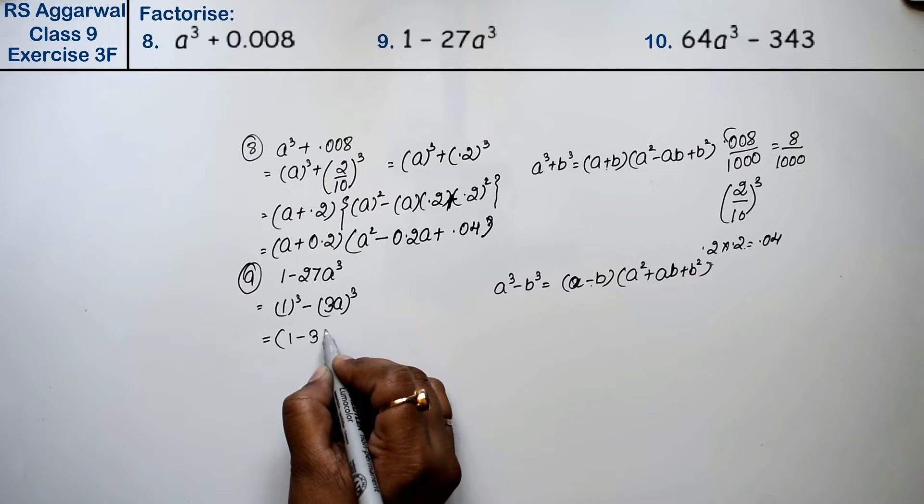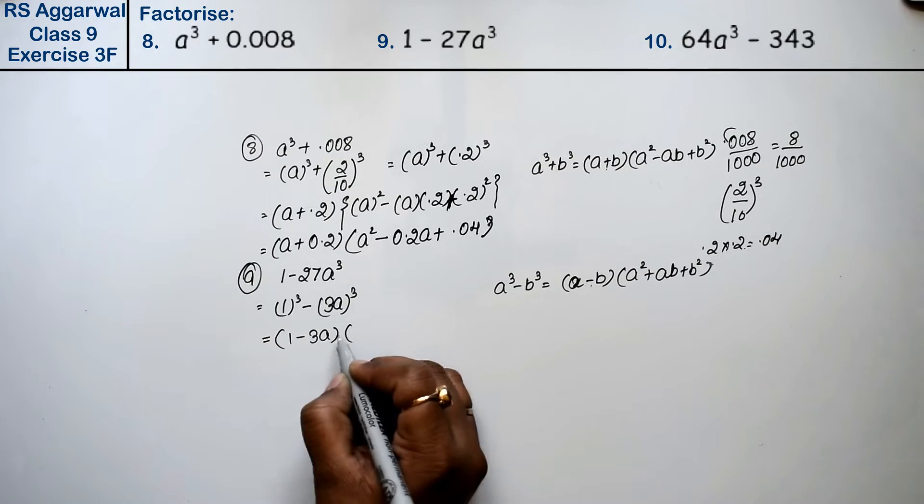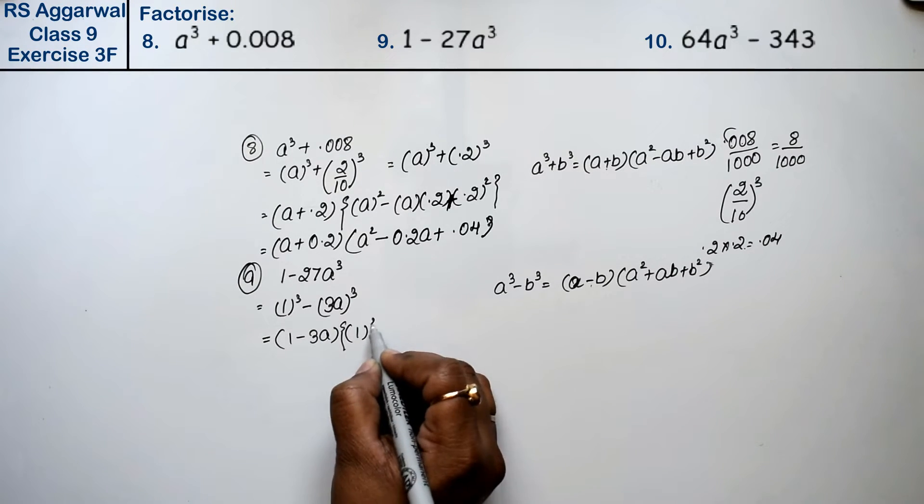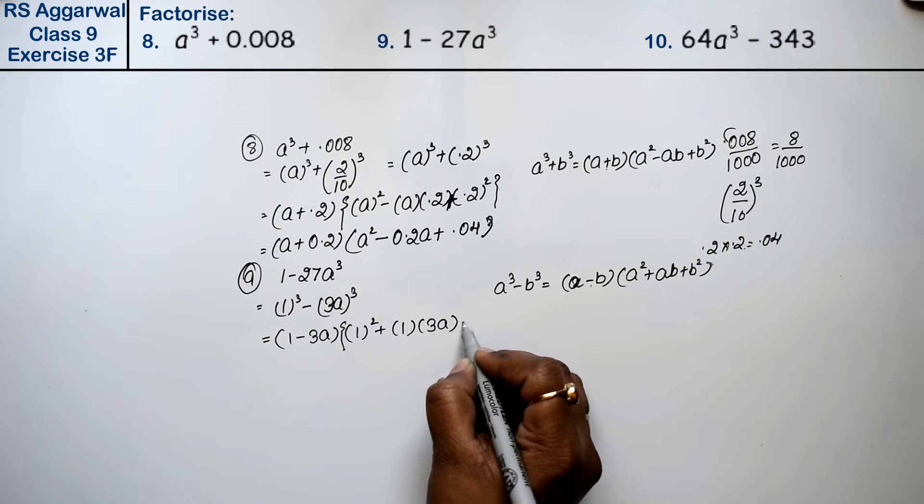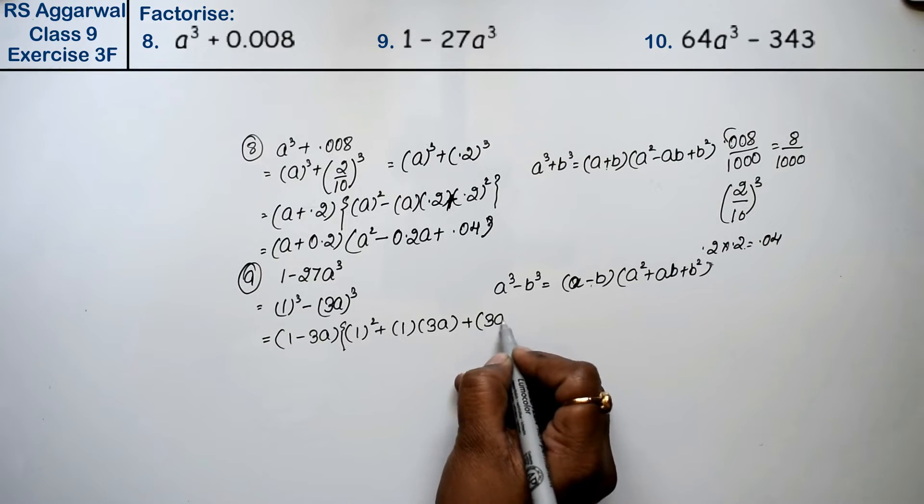That means (1 minus 3a)(1² plus 1 times 3a plus (3a)²).